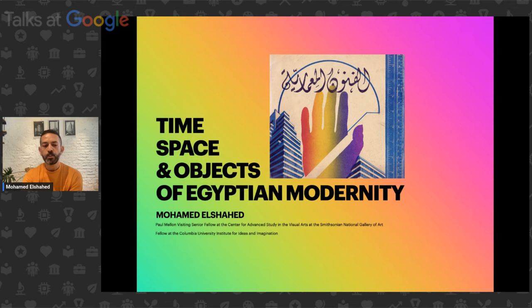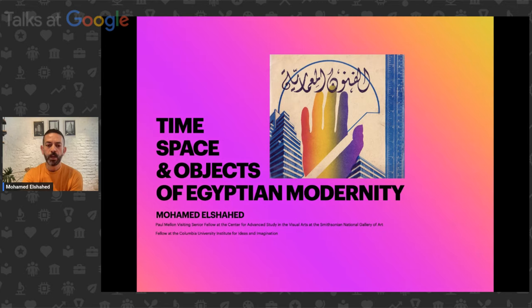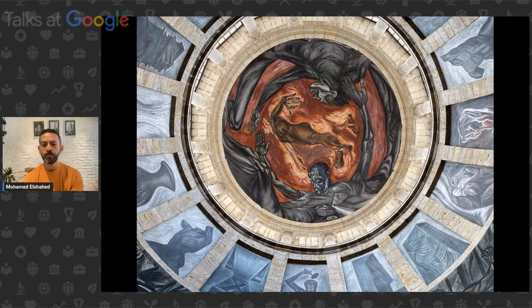Time, space, and objects of Egyptian modernity — these words will guide the rest of the talk. Aided here with a few Mexican murals, as Mexico is where I live, I have shifted to the next phase of my life exploring Mexico and Latin America in a comparative way with the Middle East. This comparative approach really presents interesting, sometimes jarring truths.